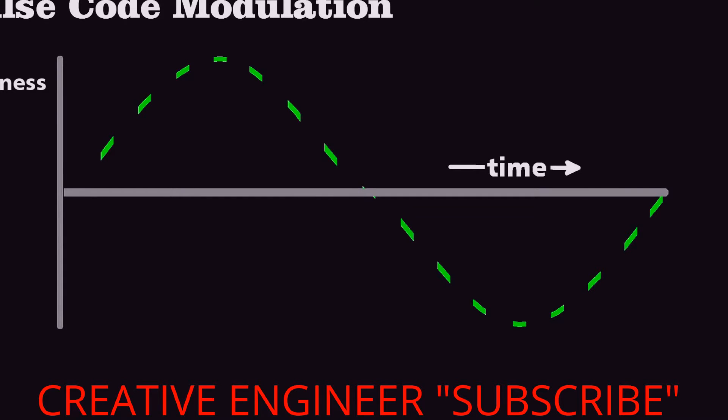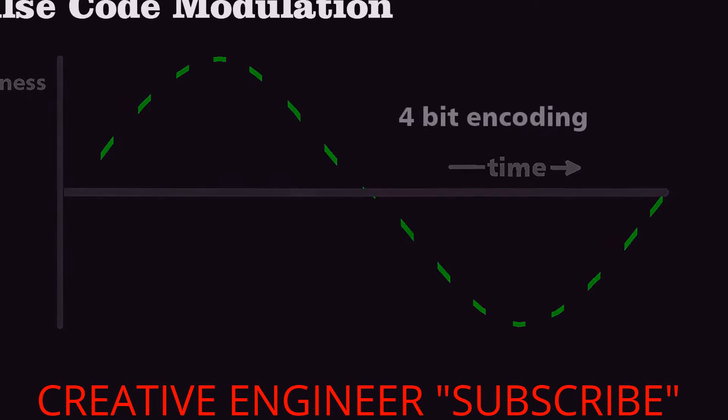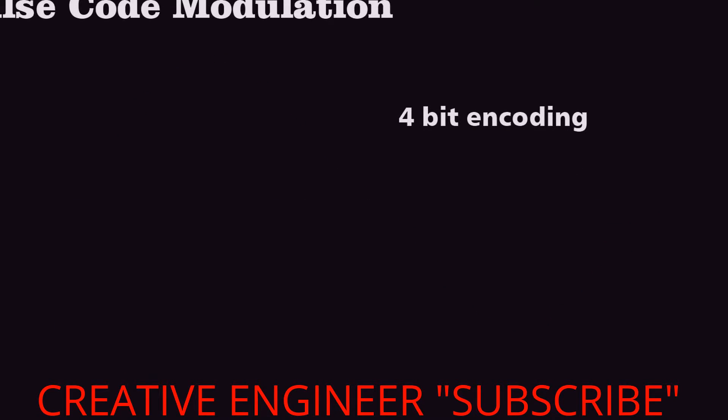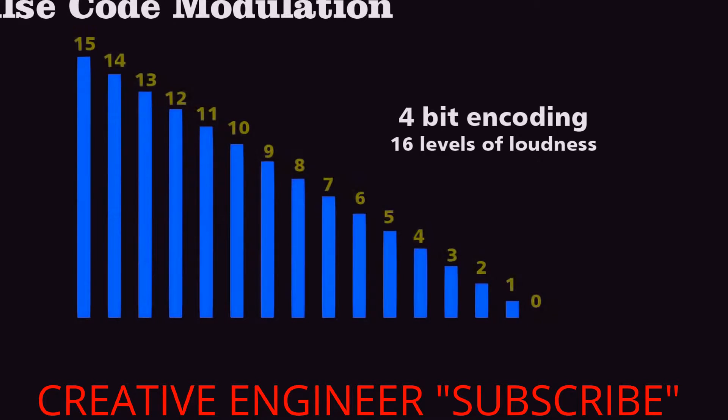We want to make this a digital signal, which means discrete values of loudness, and not just any value. For example, I'll use four bits, which means I have 16 possible values for the loudness.